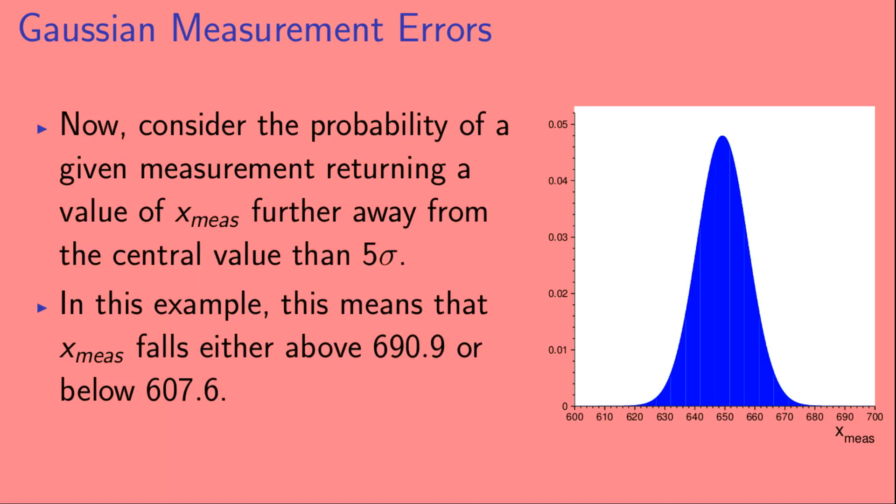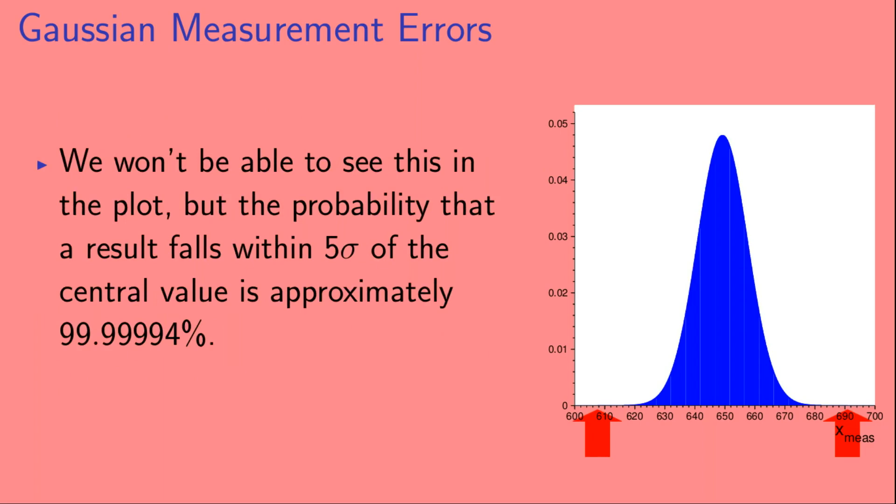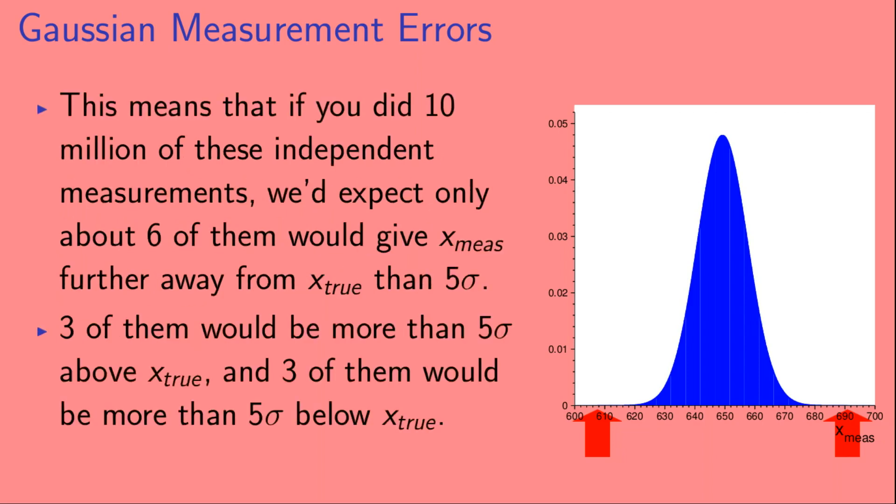Okay, now consider the probability of a given measurement returning a value of x_meas further away from the central value than five sigma. In this example, this means that x_meas falls either above 690.9 or below 607.6. We won't be able to see this in the plot, but the probability that a result falls within five sigma of the central value is approximately 99.99994%. This means that if you did 10 million of these independent measurements, we'd expect only about six of them would give x_meas further away from x_true than five sigma. Three of them would be more than five sigma above x_true, and three of them would be more than five sigma below x_true.